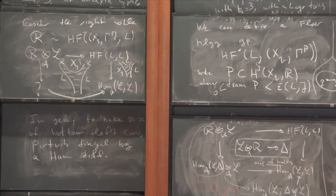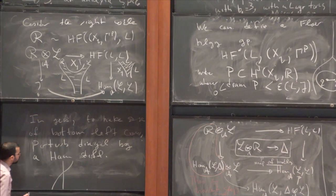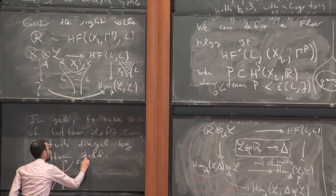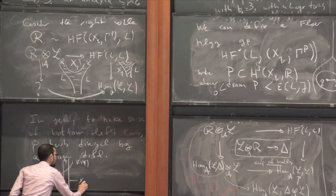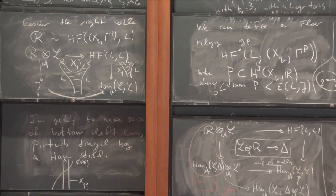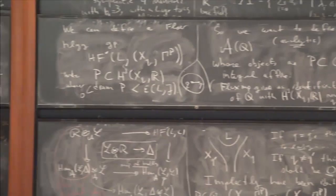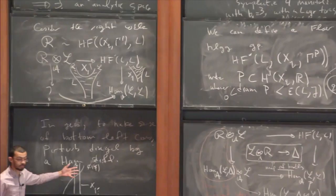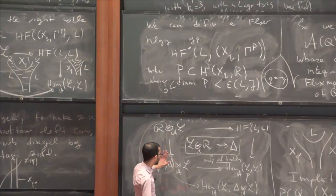I have one minute. To actually resolve the problem, you have to use Hamiltonian perturbations. In general, to make sense of that diagram at the bottom left corner, you perturb the diagonal by a Hamiltonian symplectomorphism, a Hamiltonian diffeomorphism. Once you perturb it by a Hamiltonian diffeomorphism, this becomes not as dire a situation. In the sense that if it's true that X_Q intersects its image under this Hamiltonian diffeomorphism transversely, then that's going to be true for every nearby fiber.